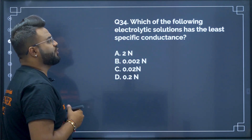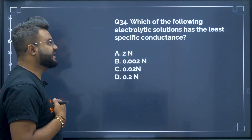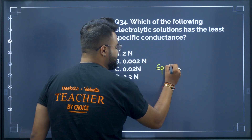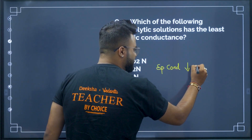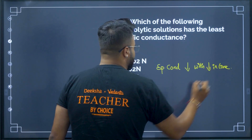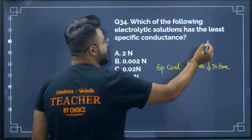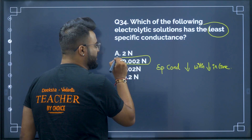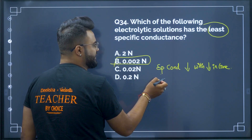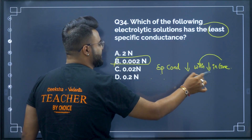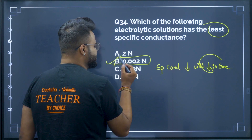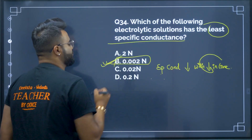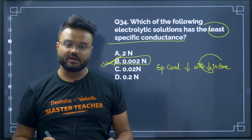Question number 34: which of the following electrolytic solutions has the least specific conductance? Specific conductance decreases with decreasing concentration. Therefore, specific conductance is least in 0.022 normal, where concentration is the lowest among the options. Therefore, the least specific conductance will be in option B.